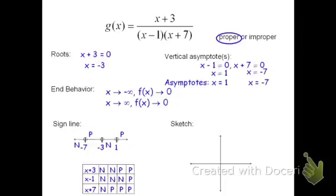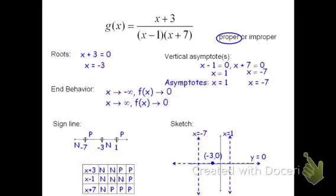For the sketch, I know we have the two vertical asymptotes and the one root, so I'll sketch those in first. x equals negative 7 is somewhere on the left, and x equals 1 is on the right. I also have the x-intercept at negative 3, 0. I also have the end behavior, which tells me we're going to have a horizontal asymptote for the ends where y equals 0. In the first interval from negative infinity to negative 7, the sign line says it's negative, so it's below the x-axis and approaching both asymptotes. Moving from right to left, it rises from the asymptote and then flattens off just below the x-axis.